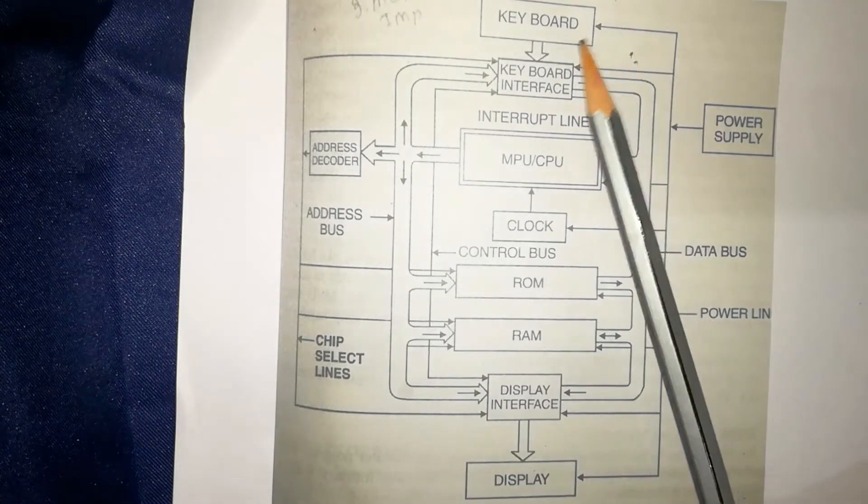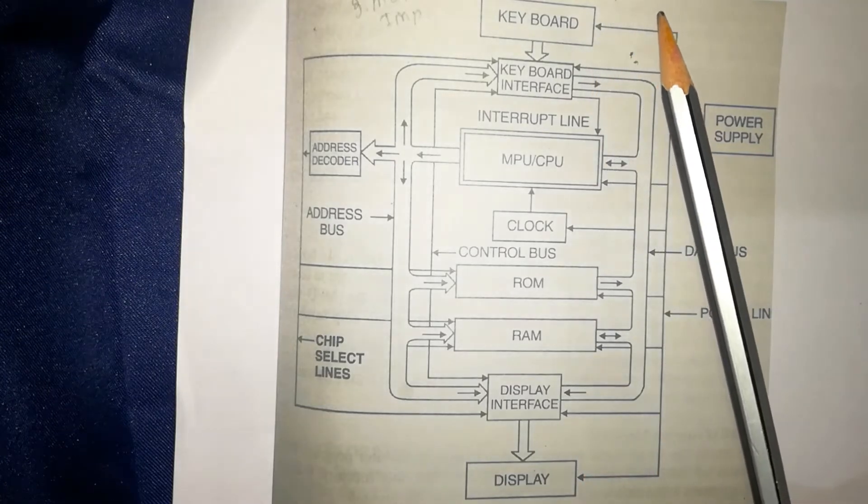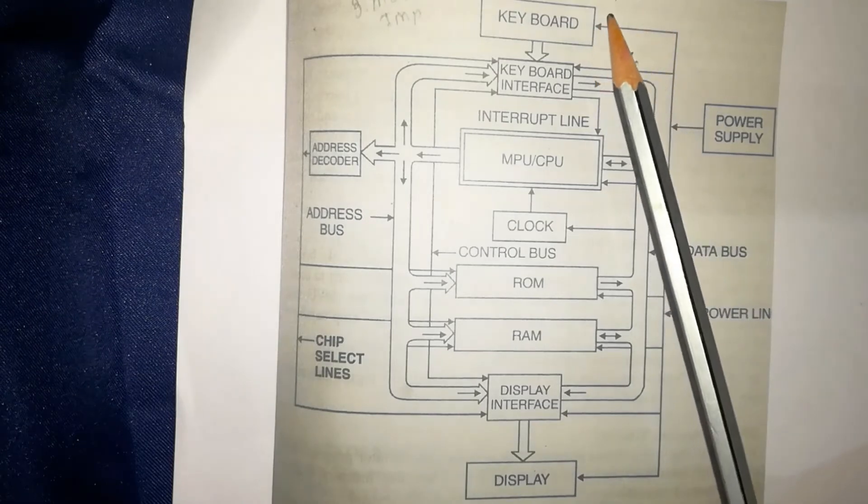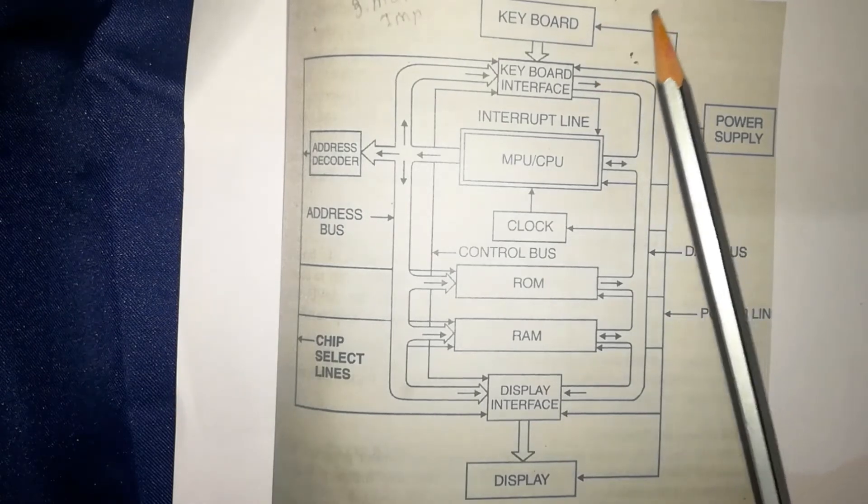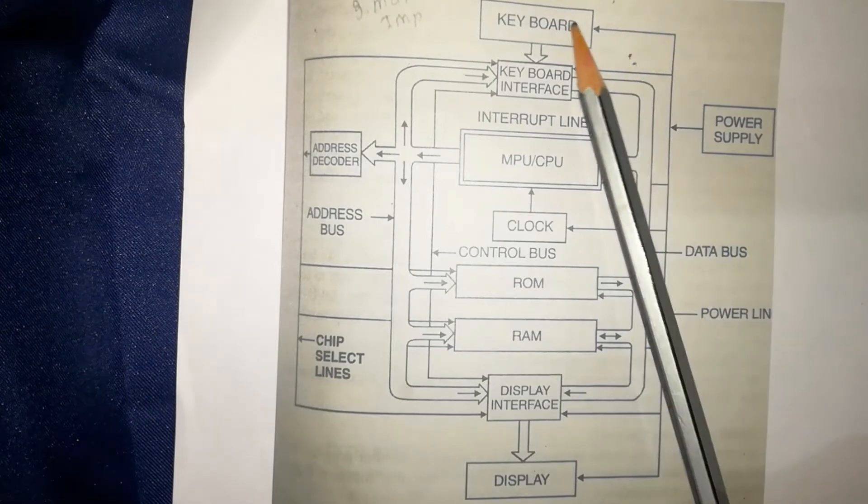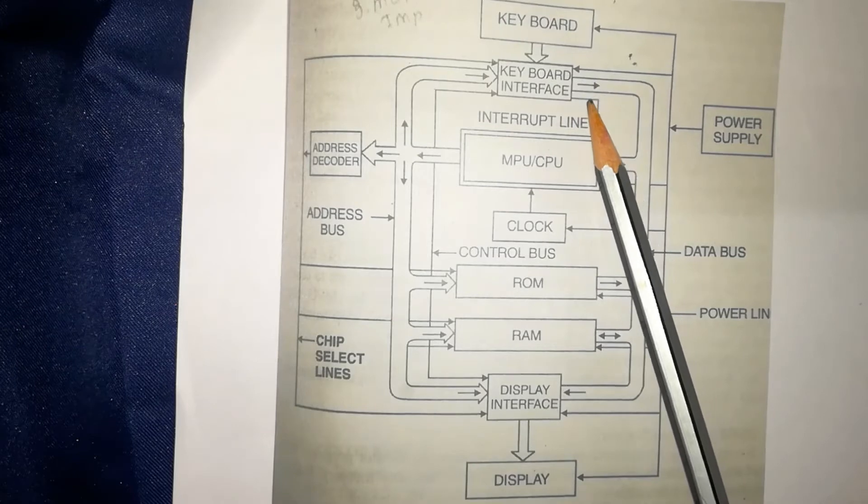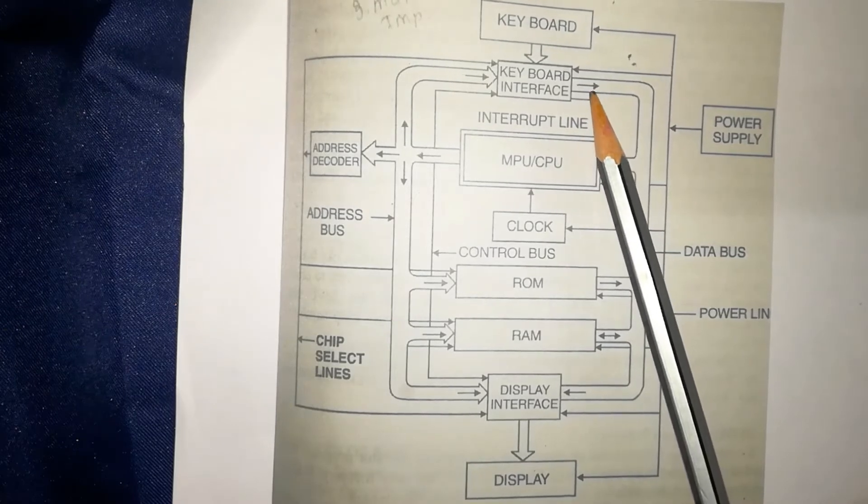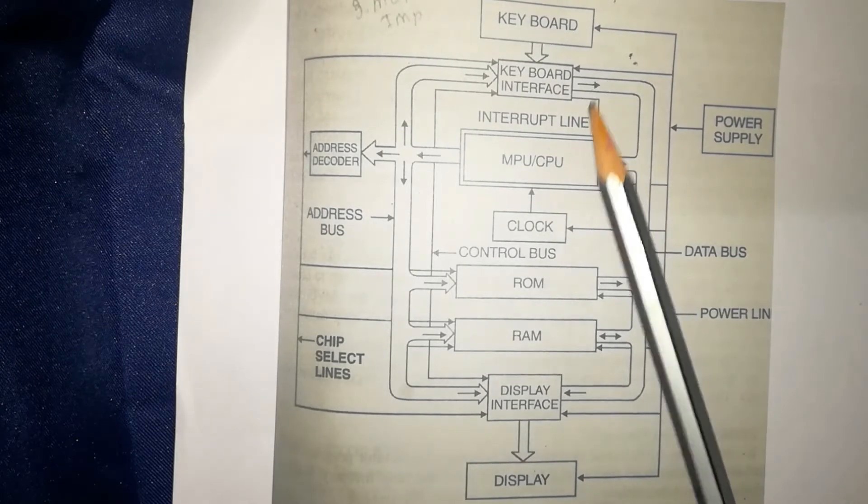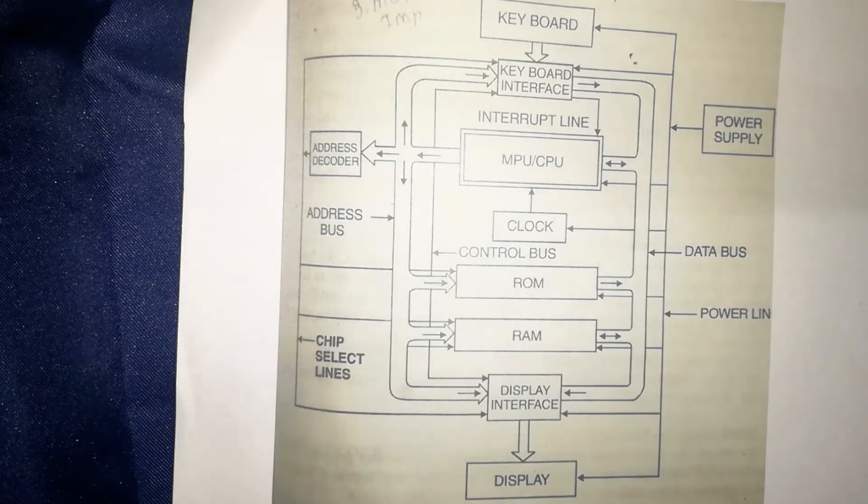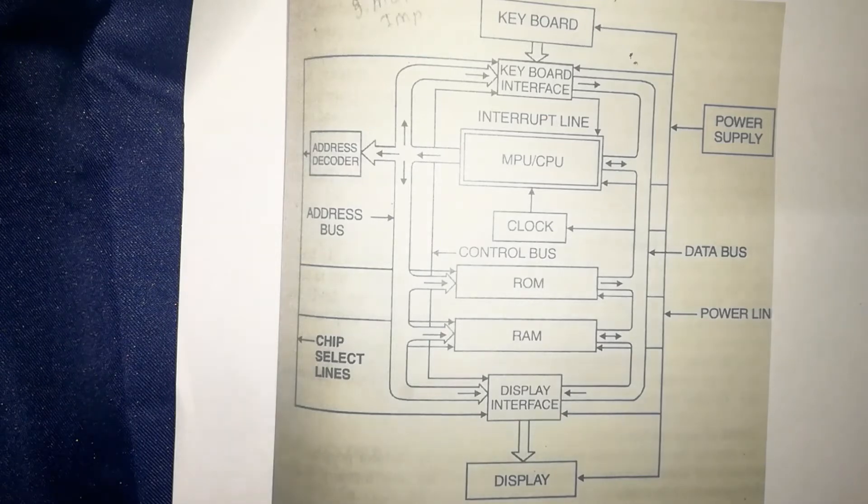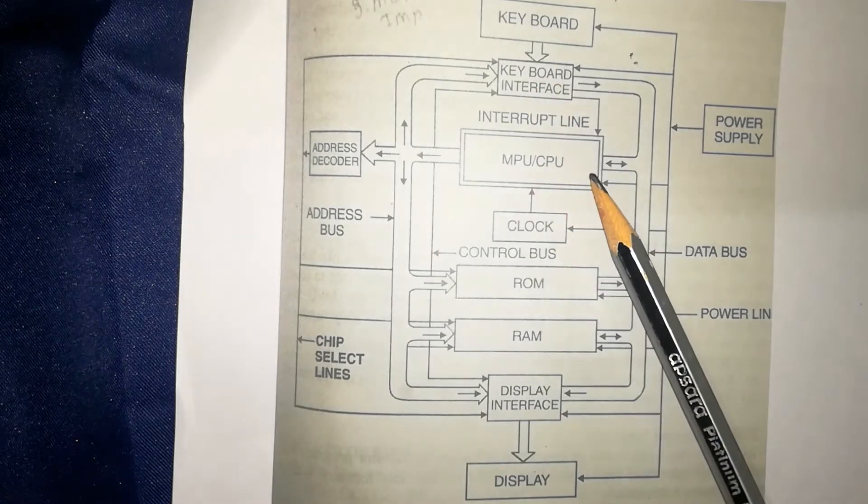Next is input devices. Here it is keyboard. We can enter data or instructions through keyboard. This data or instruction enters in the keyboard interface, which is a special chip. Keyboard interface is connected to address bus, chip select, and control lines.